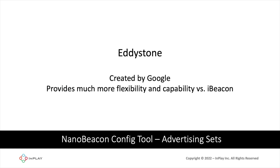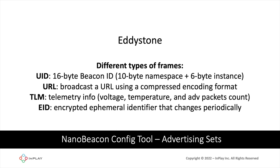Eddystone is another standard introduced by Google that provides more flexibility and capability versus iBeacon. It provides different types of frames, which are different advertising packet data formats. The UID frame includes a 16-byte beacon ID comprising a 10-byte namespace and a 6-byte instance. The URL type broadcasts a URL using a compressed shortened encoding format. The TLM frame carries telemetry information such as voltage, temperature, and an advertising packet count. Finally, the EID is an encrypted ephemeral identifier that changes periodically based on configuration with a web server. Typically, TLM is sent alongside the UID, and in the case of EID, the TLM will be encrypted — interleaved with the UID or EID at lower transmission ratios.